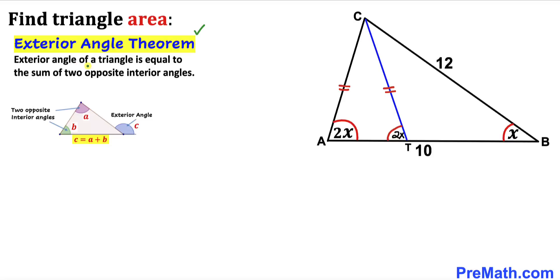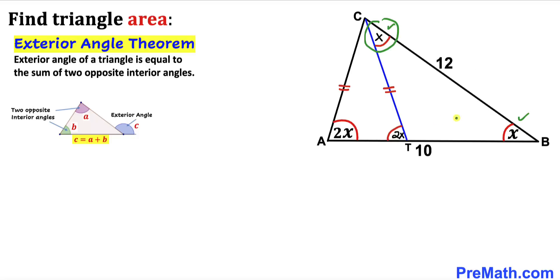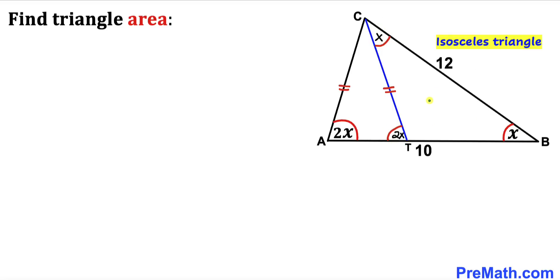Now let's recall the exterior angle theorem: the exterior angle of a triangle is equal to the sum of the two opposite interior angles, so C equals A plus B. In our case this angle is our exterior angle and it equals the sum of the two opposite interior angles, so this angle has got to be X — meaning X plus X gives us 2X.